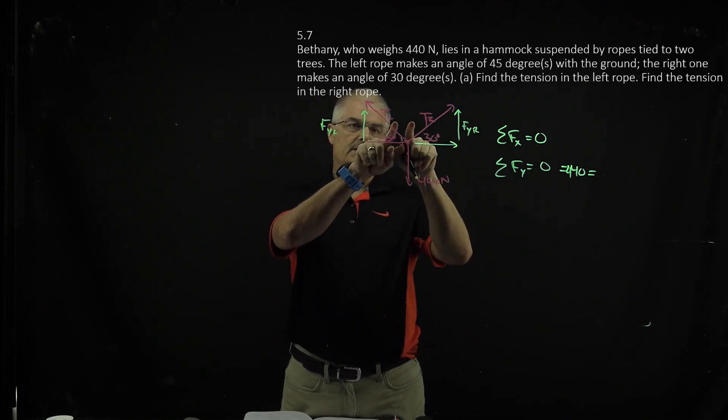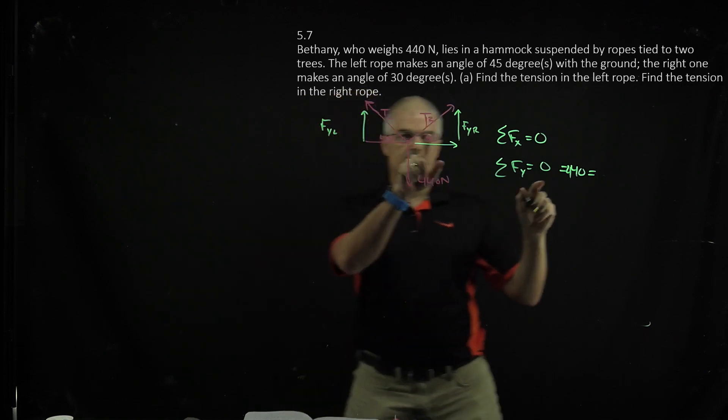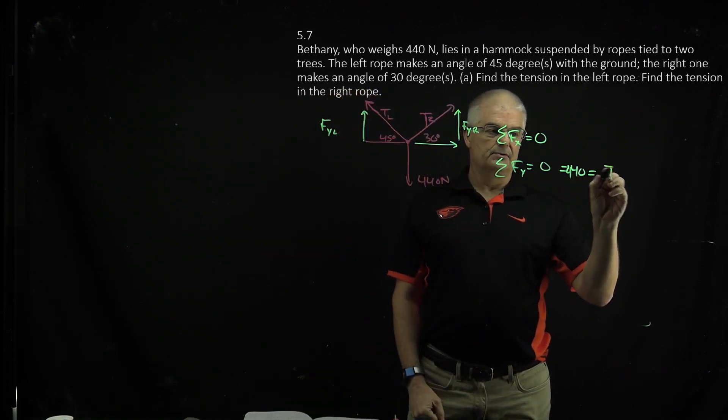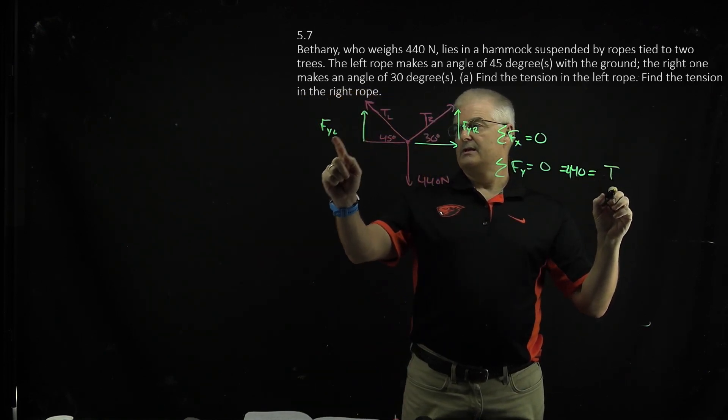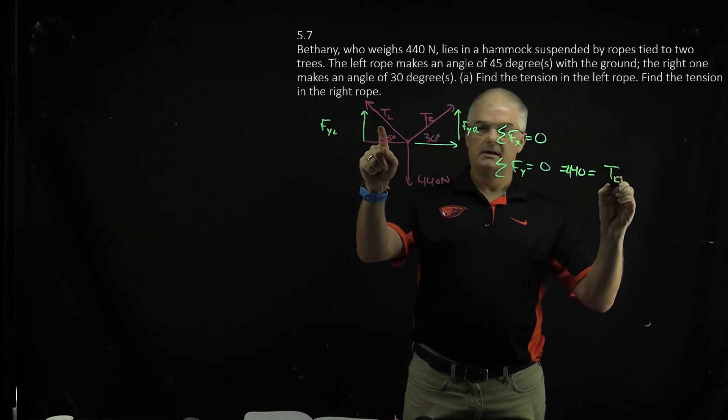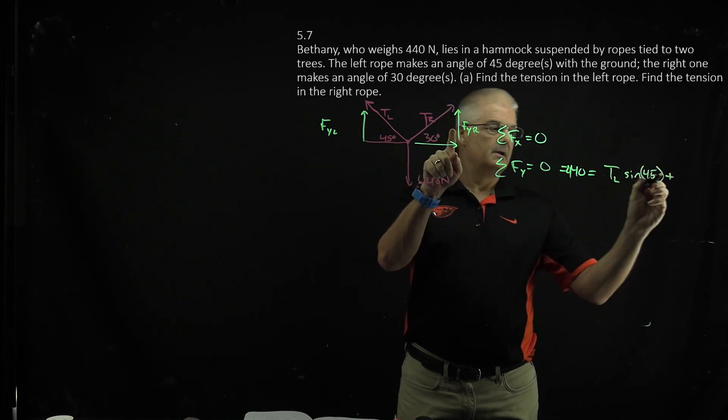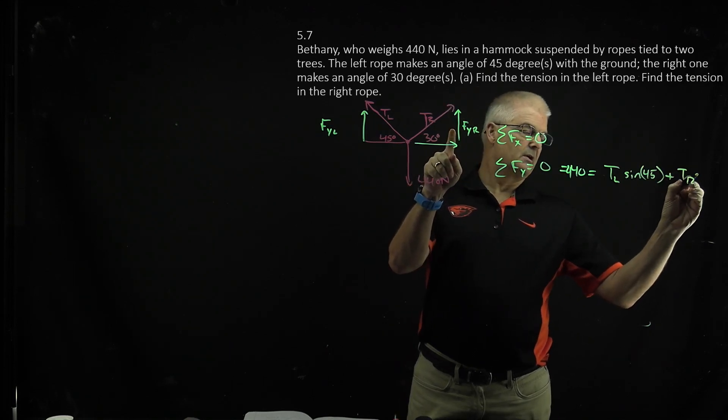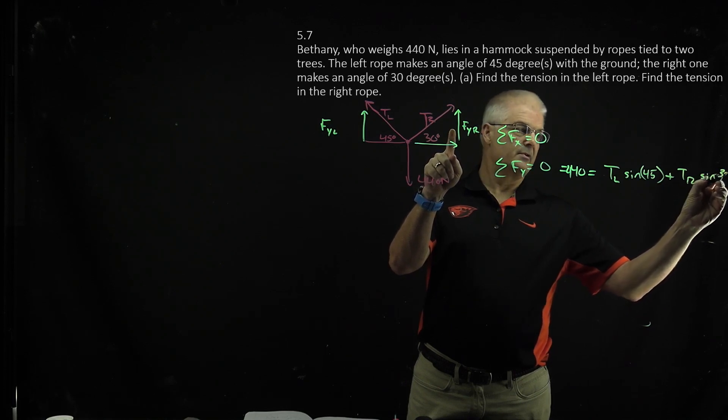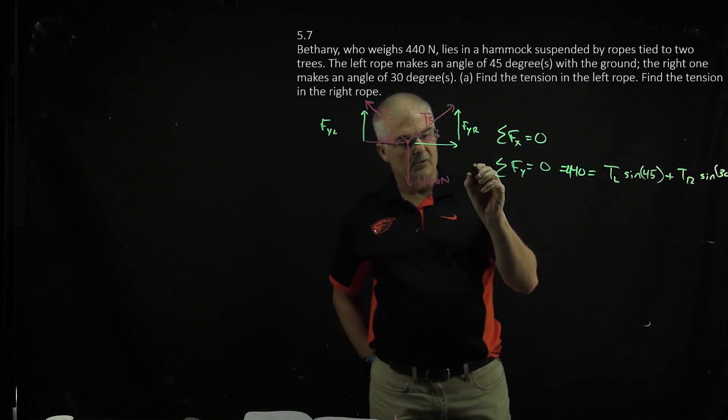And these are going to be the sines, sines of the angles times that, right? So you can say this would be equal to tl times sine 45 plus tr sine 30. So that's equation number one.